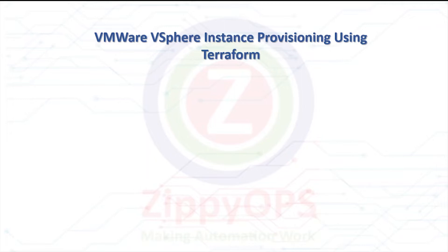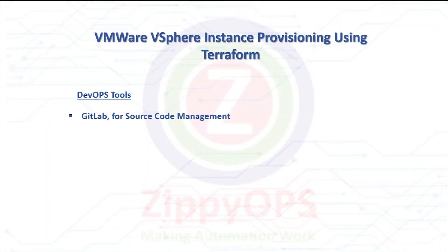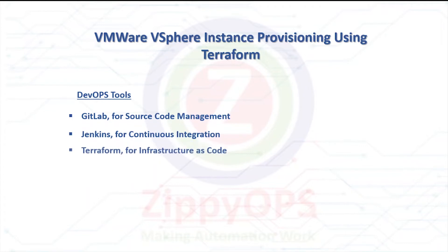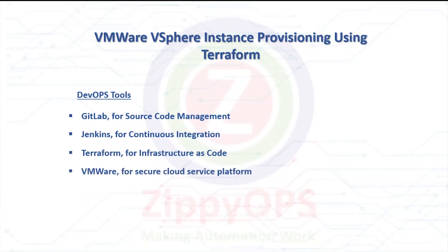The complete process is orchestrated through the Jenkins pipeline. The tools used in this VMware vSphere Instance Provisioning are: GitLab, used for source code management; Jenkins, used for continuous integration; Terraform, used for infrastructure as code; and VMware vSphere, for the secure cloud service platform.